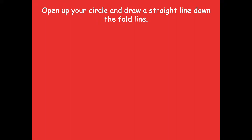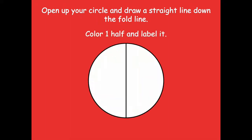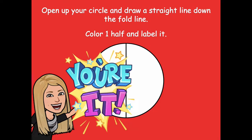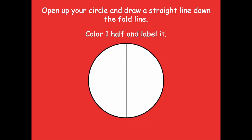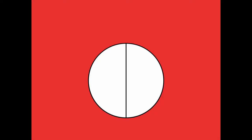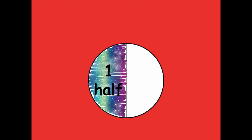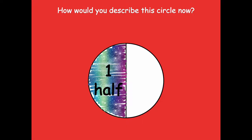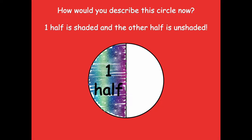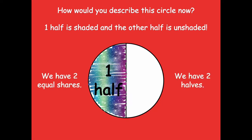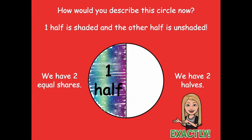Now I want you to open your circle and draw a straight line down the fold line, then color one half and label it — the same way we did with our sheet of paper. Pause the video, draw a line down the middle, color half and label it, then click play when ready. Here I'm coloring half and labeling it one half. If you colored the other side of your circle, that's okay — that's still one half. How would you describe this circle now? We could say one half is shaded and the other half is unshaded. We have two equal shares and two halves.